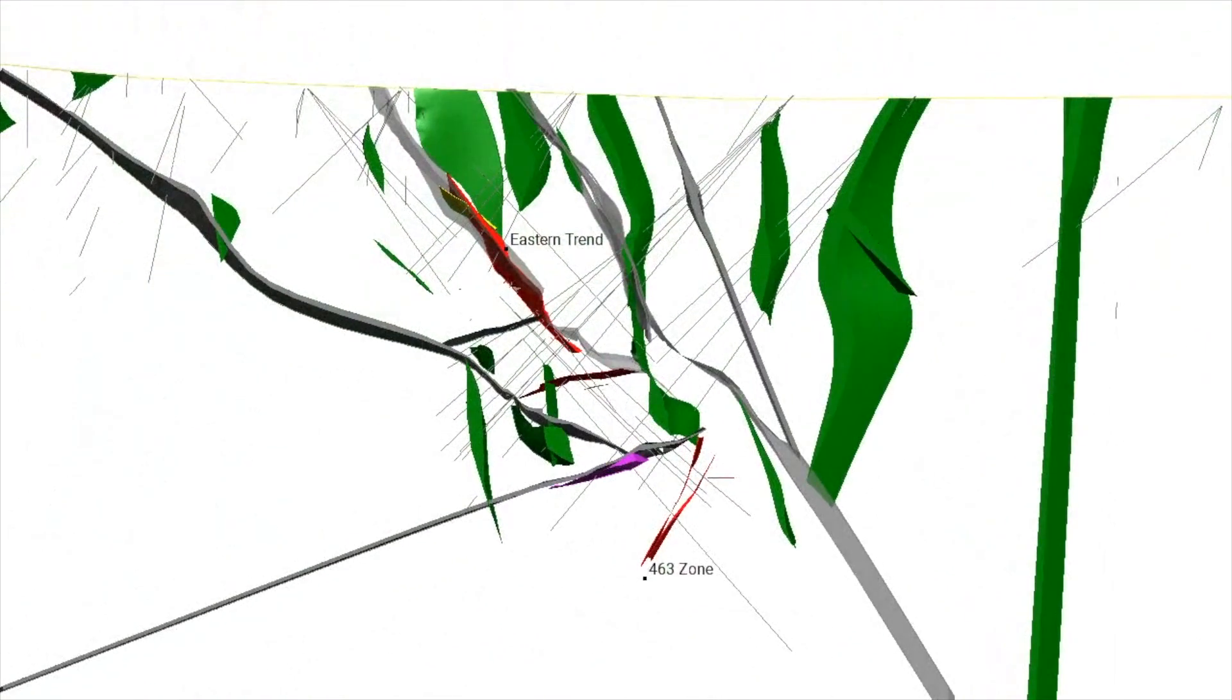The gold zones consist of both unaltered veins such as the 463 zone and altered veins that have been entrained into a later shear zone such as our main eastern trend.